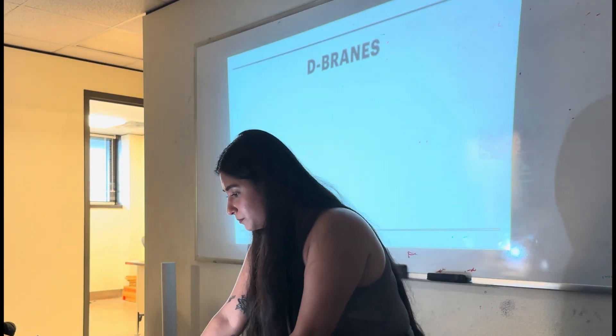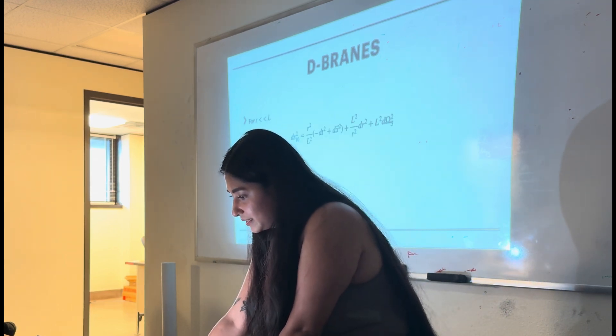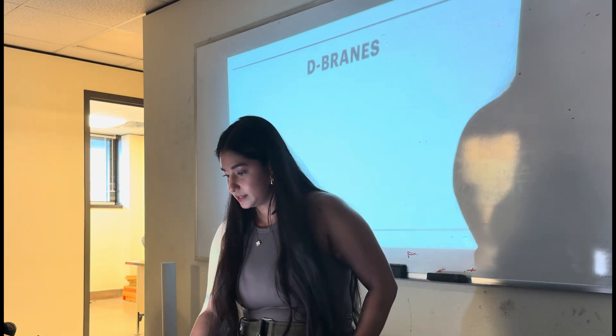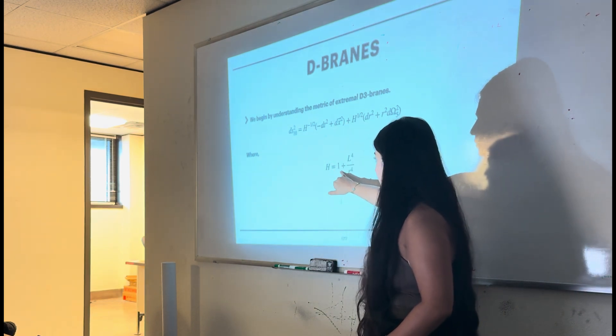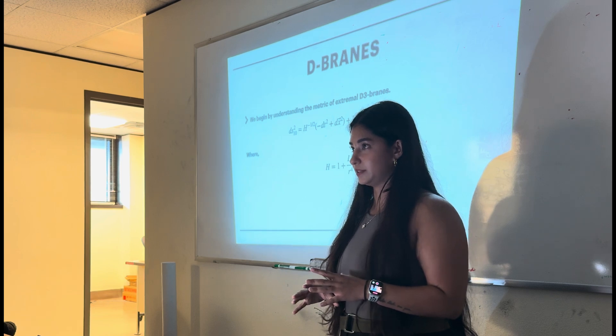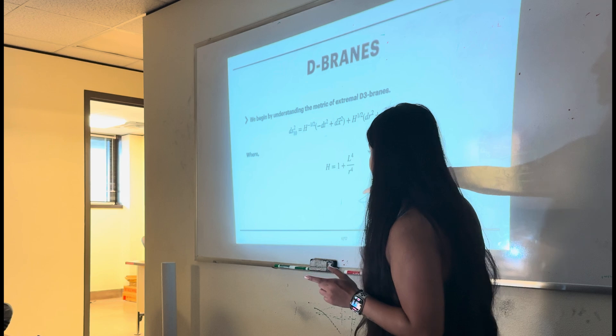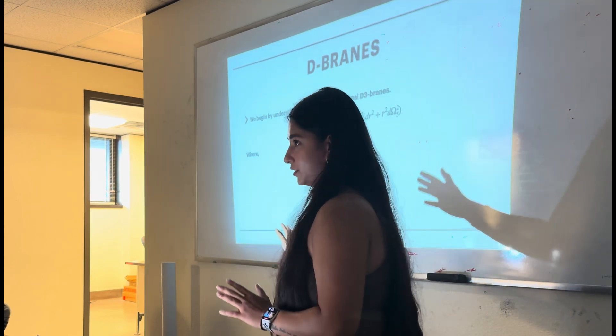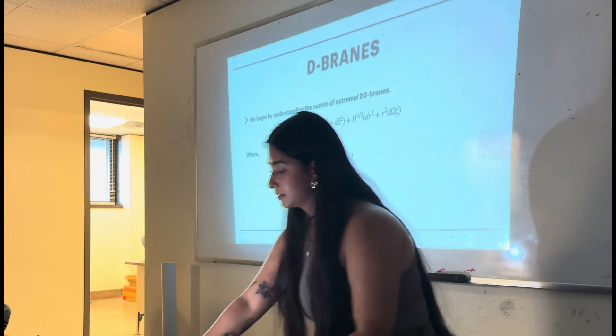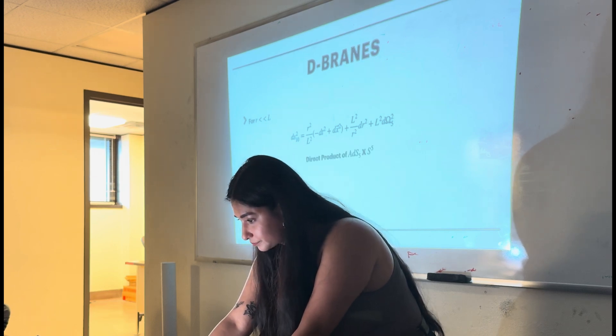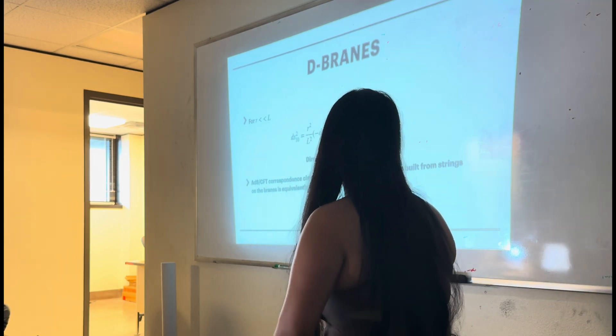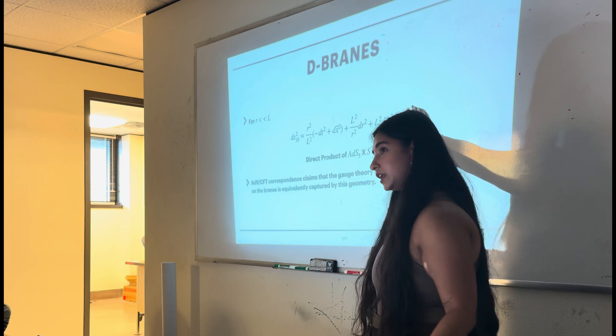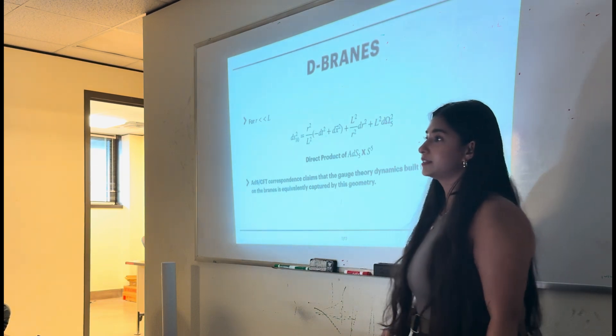On the other hand, the second case, which is important to us, is when R is extremely small than L. What happens in that case is, we have a metric that looks like this, which is a direct product of AdS5 cross S5. In this case, what we mean when we ignore one, is the fact that we're moving very close to D3-branes. When we move very close to D3-branes, what happens is, this metric looks like an AdS5 cross S5 metric. We are so close to the metric that we lose track of the asymptotically flat region. So, we're just very close to the D3-branes, where the metric is taking the form of this. And what this means is that the claim that AdS-CFT gives is that the gauge theory dynamics built from strings on the brane can equally be captured by this geometry.